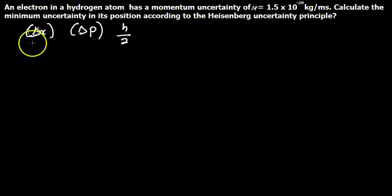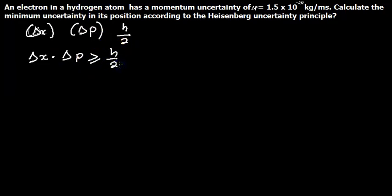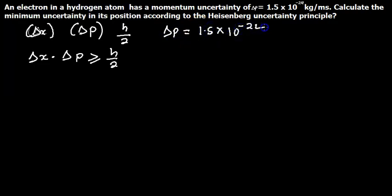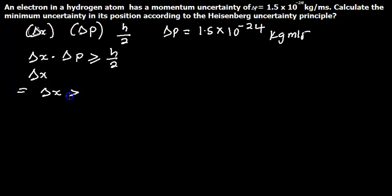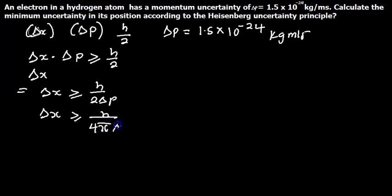Therefore, we can set dx multiplied by dp is greater than or equal to h-bar divided by 2. In this problem, we are given delta p to be 1.5 × 10⁻²⁴, with the unit in kilogram meter per second. We rearrange everything to solve for dx: dx is greater than or equal to h divided by 2 delta p, which is also equal to h divided by 4π delta p.